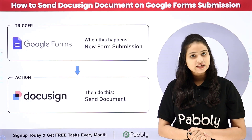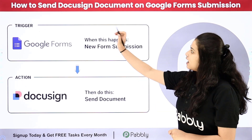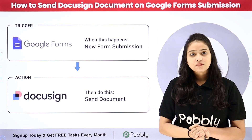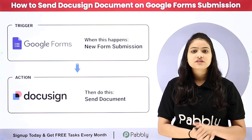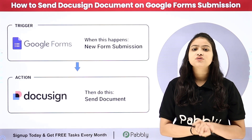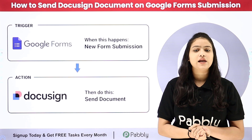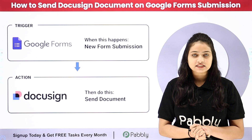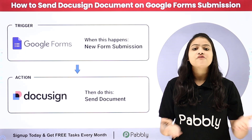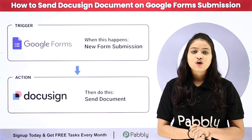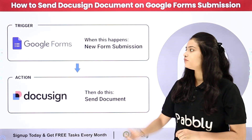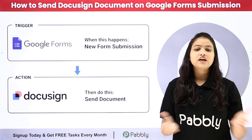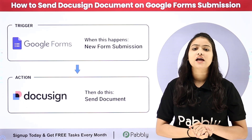Hello everyone, welcome back to Pabbly. In this video we are going to learn how to send a DocuSign document on Google Forms submission. I am running a rental property agency and my objective is that whenever an interested tenant submits the form which I have created with Google Forms for renting properties, then immediately a lease agreement should be sent to that same person with the help of DocuSign for e-signature. We are going to automate this entire process using Pabbly Connect, without any coding or programming skills.